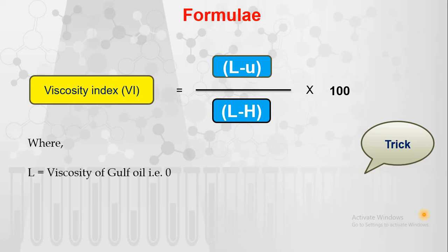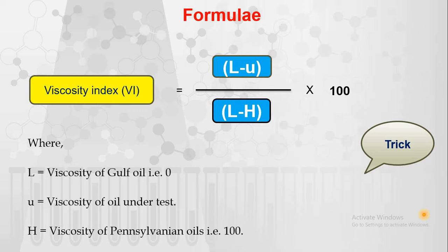L is nothing but the viscosity of Gulf oil, which is 0. U is nothing but the viscosity of the oil under test, or the viscosity of the unknown oil. And H is the viscosity of Pennsylvania oil, which is 100. For the calculation of this, there is a simple trick.